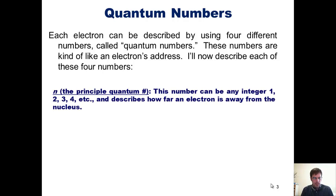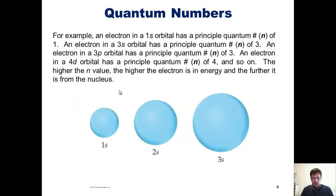The first quantum number is called n, the principal quantum number. This number can be any integer, 1, 2, 3, 4, etc., and describes how far an electron is away from the nucleus. For example, an electron in a 1s orbital has a principal quantum number n of 1. An electron in a 3s orbital has a principal quantum number n of 3. An electron in a 3p orbital also has a principal quantum number n of 3. An electron in a 4d orbital has a principal quantum number n of 4, and so on. The higher the n value, the higher the electron is in energy, and the further away it is from the nucleus.